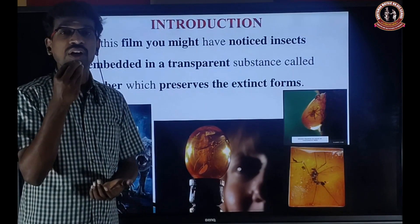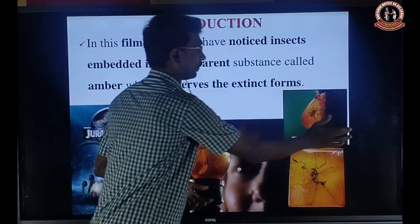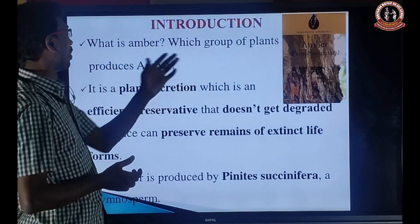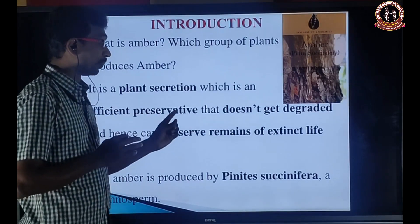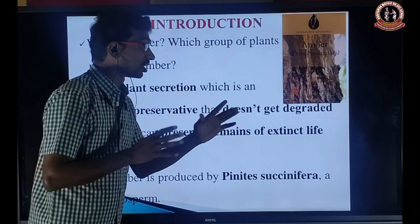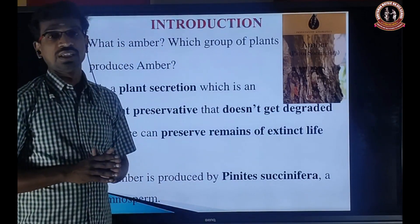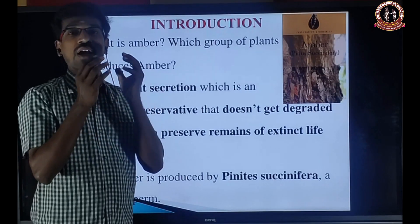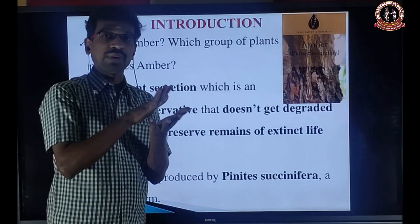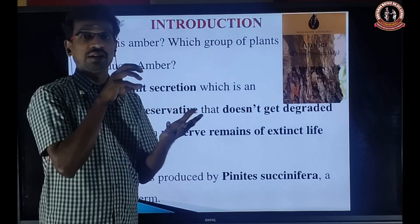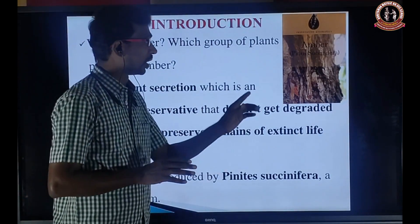Actually, the Amber is one of the secretions of the gymnosperm plant — a gum-like structure. So let's see what is the Amber and which group of plant produced the Amber. It is a plant secretion. It is an efficient preservative that does not get degraded. And hence, it preserves the remains of the extinct life forms. Extinct means the particular group of animal or insect is totally eradicated from the world, but it will be totally preserved by this Amber. That is the extinct form. The Amber is produced by one of the gymnosperm plants.